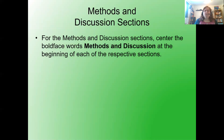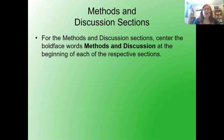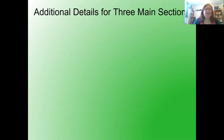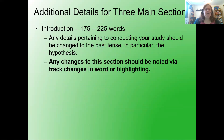We've already talked about the introduction section and how that turns into a background section. For the methods and discussion sections, center the boldface words 'Methods' and 'Discussion' at the beginning of each respective section. The introduction — now called the background — is 175 to 225 words. Any details pertaining to conducting your study should be changed to the past tense, in particular the hypothesis.